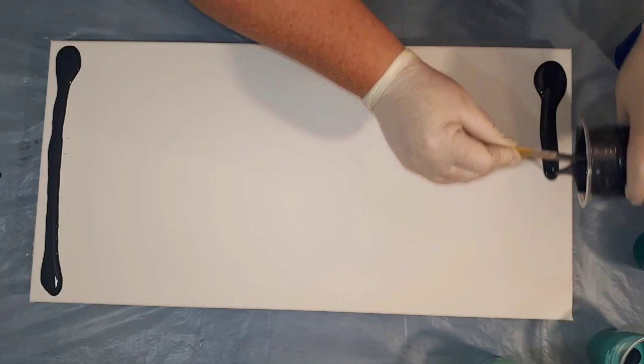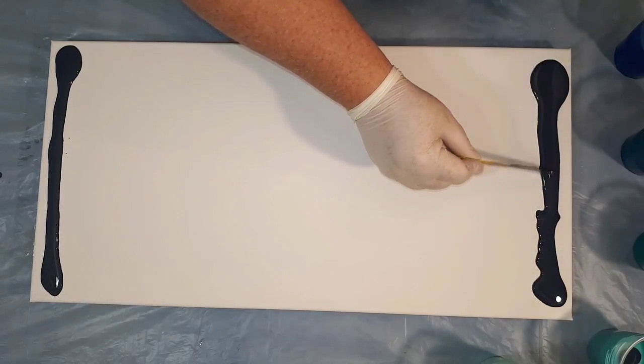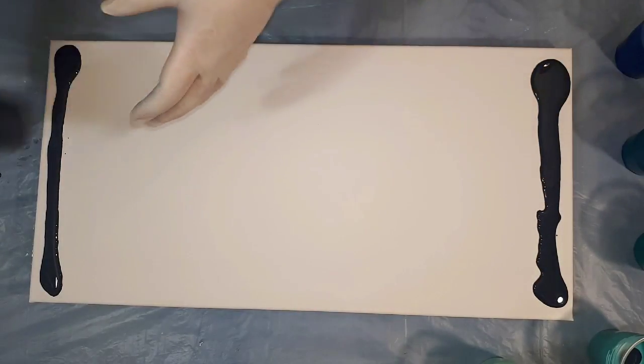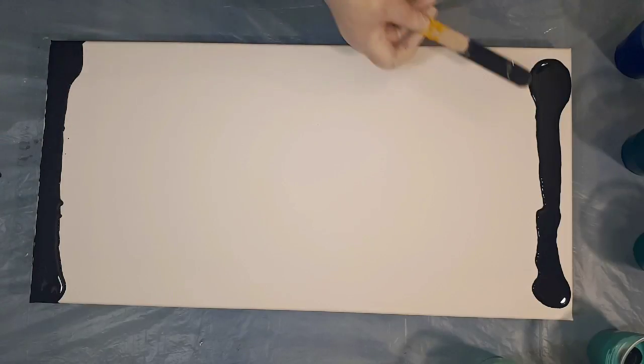I'm also using this Dark Navy to coat the sides because when I do tilt it I will be tilting from bottom to top, not from left to right. So doing this will just make sure that those sides are covered as the paint will run down the other edges.